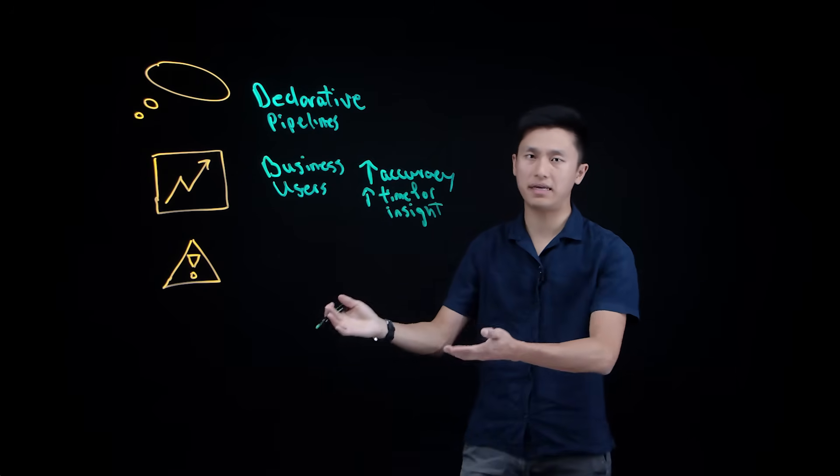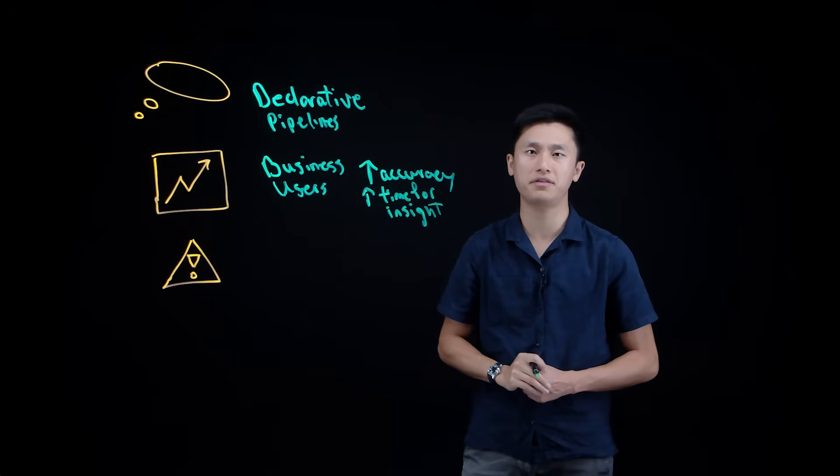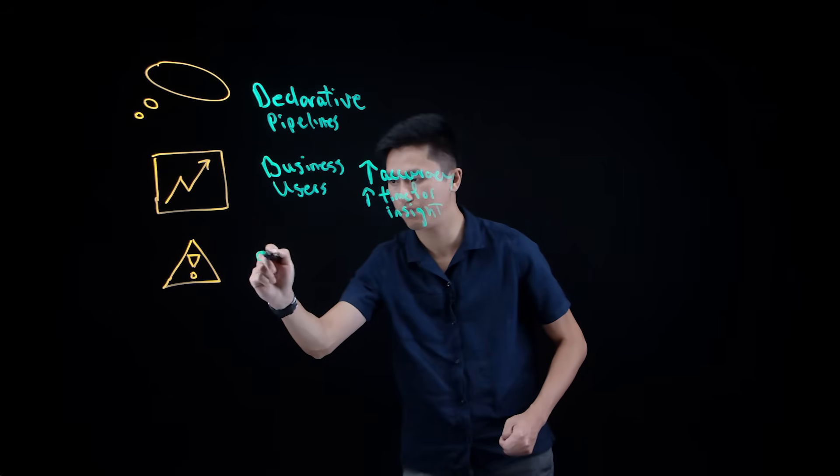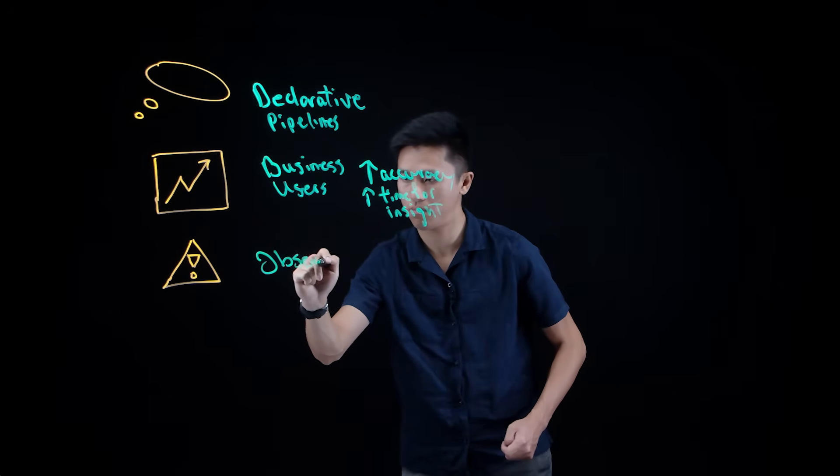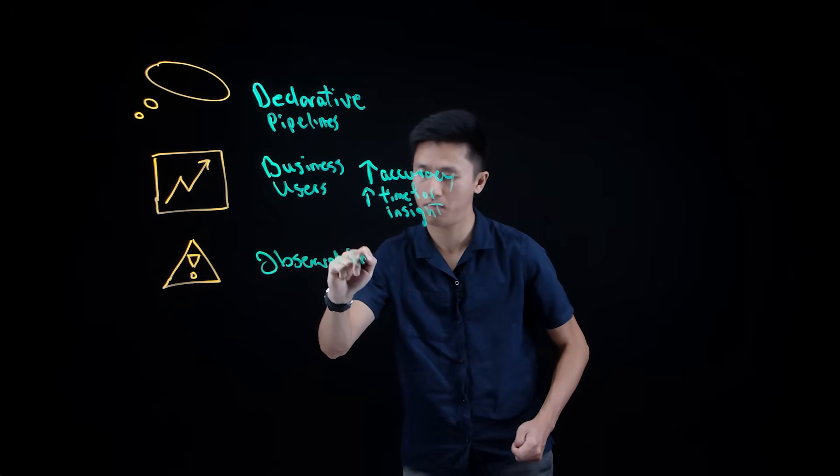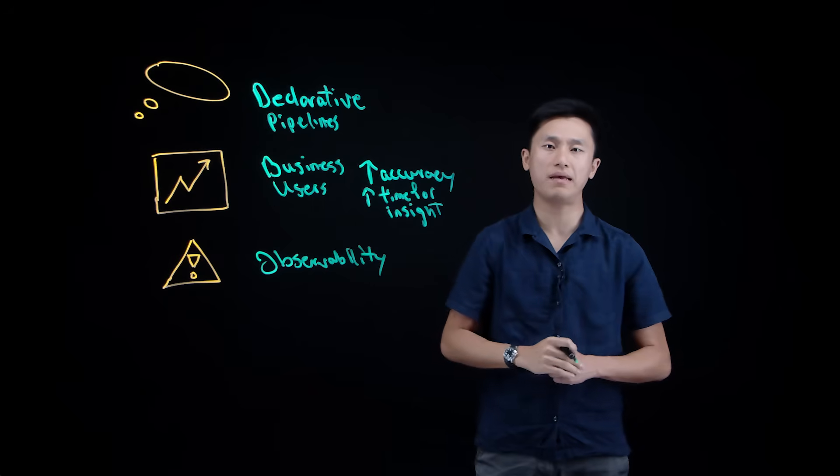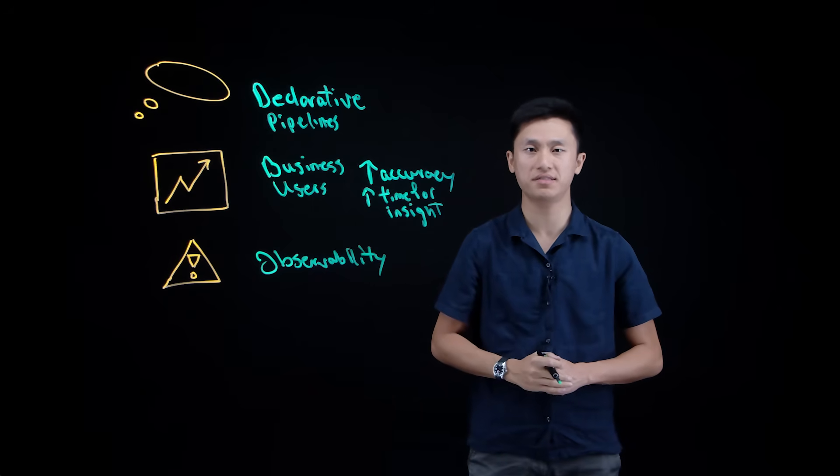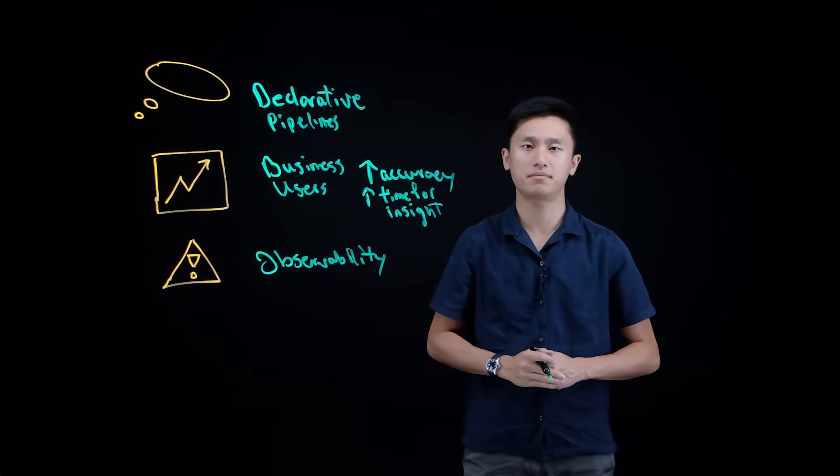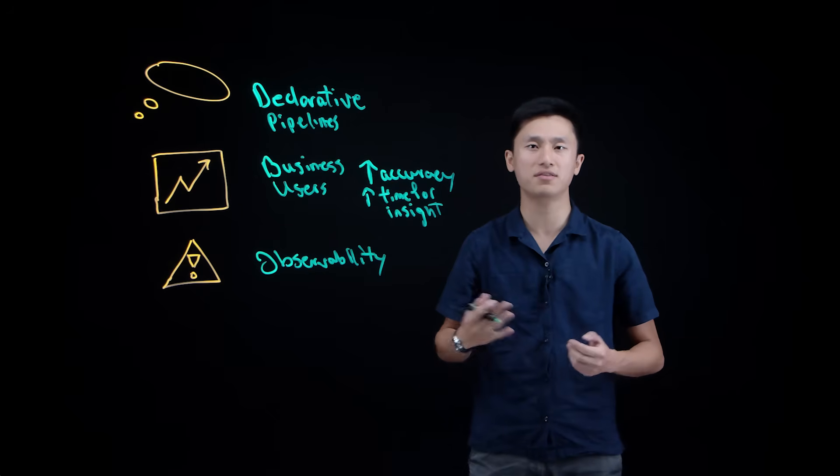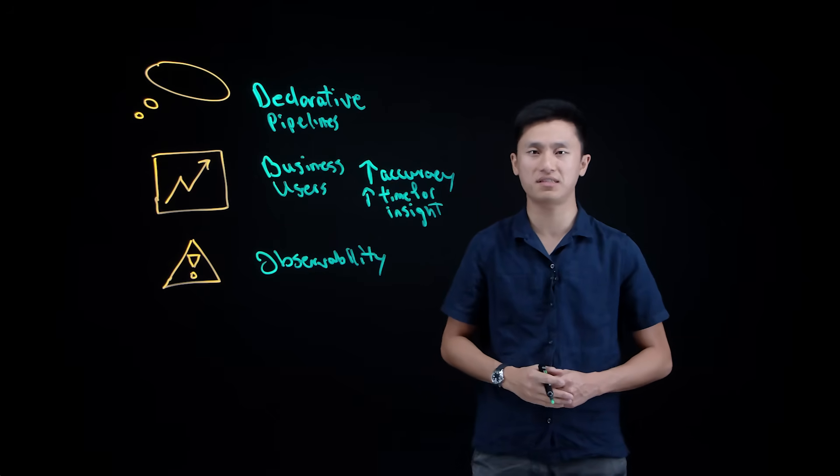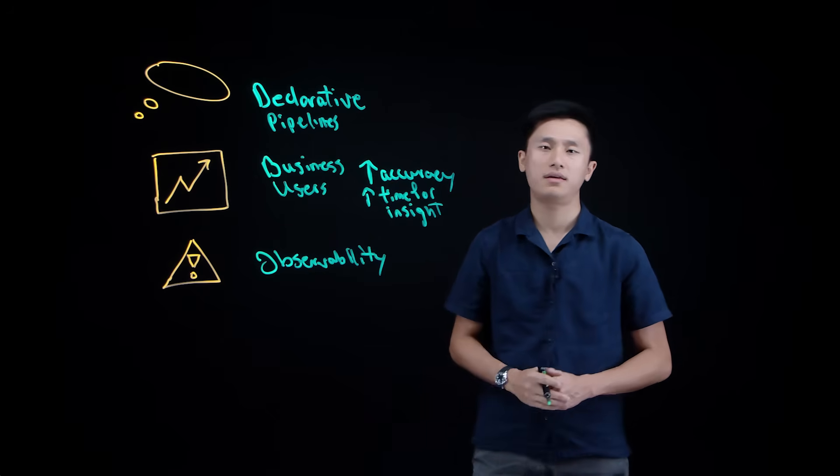And then lastly, AI agents can also help with data quality and observability. The agents would be able to detect column changes or type mismatches early and propose fixes before jobs fail.